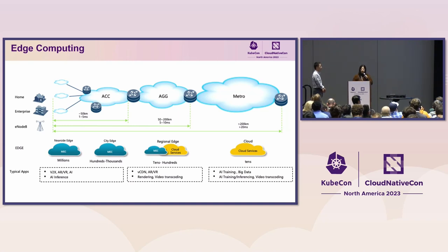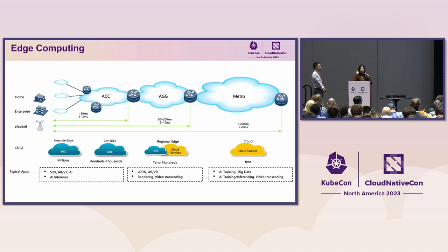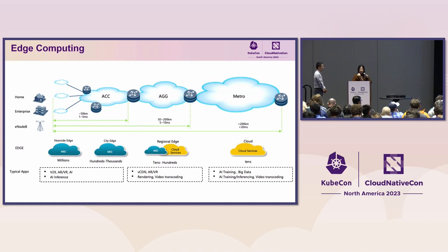City edge — as we move further from the near-side edge to the city edge, the scope narrows to hundreds or thousands of nodes, serving applications like content delivery networks (CDNs) and more intensive AR/VR tasks. Regional edge — expanding our reach, the regional edge integrates cloud services and can serve tens to hundreds of applications dealing with tasks that can tolerate slightly higher latency, such as AI training, big data analytics, and video transcoding.